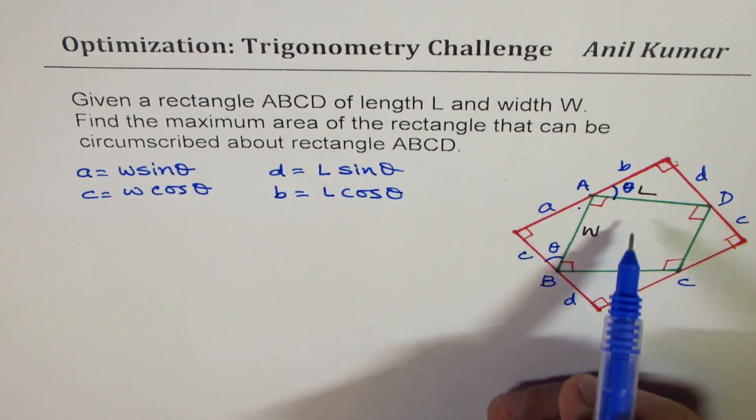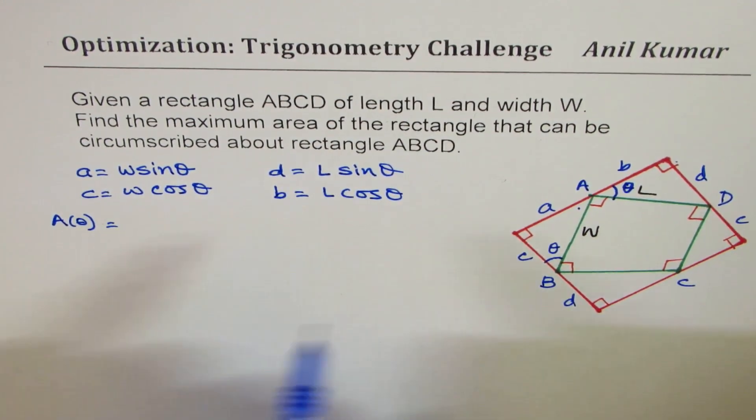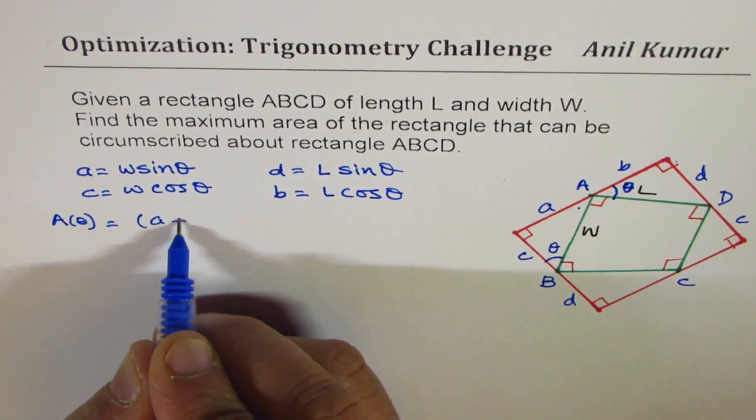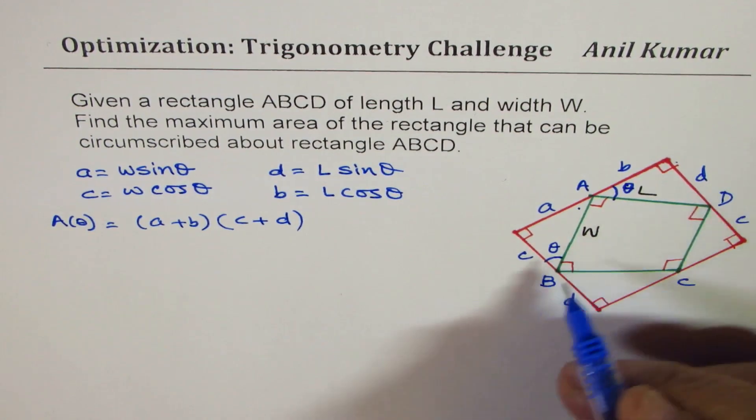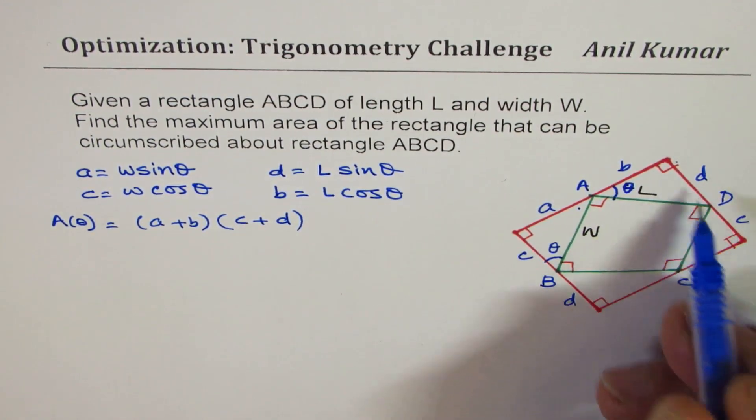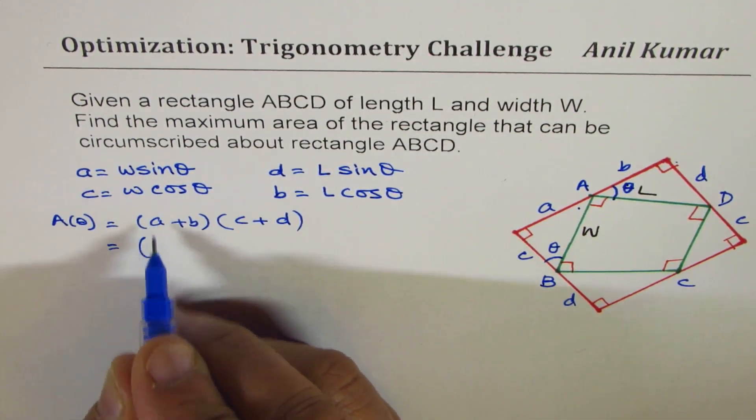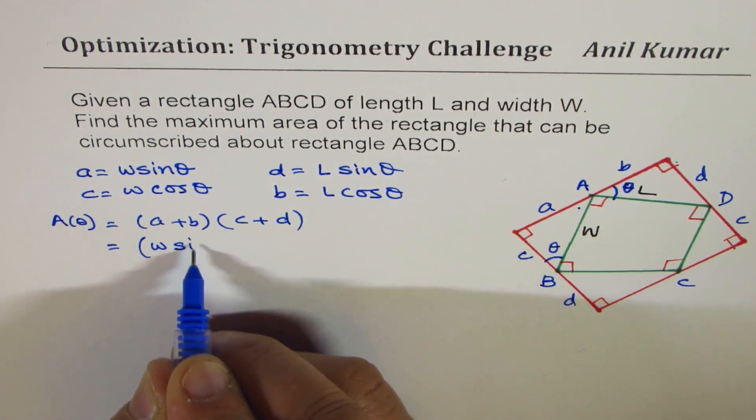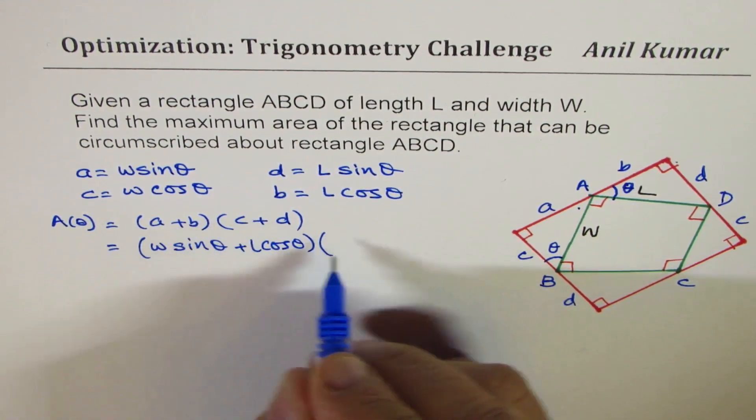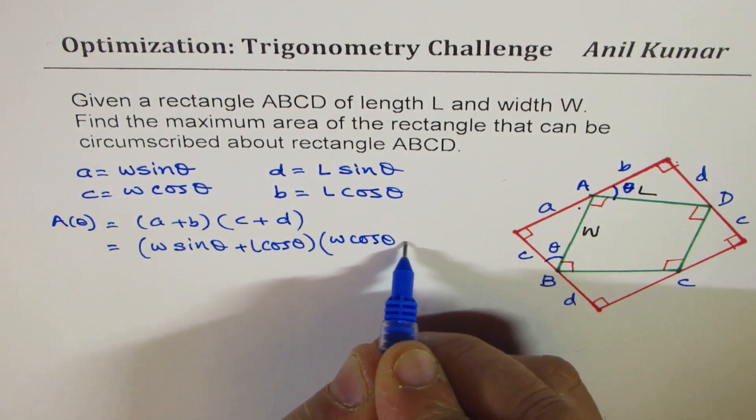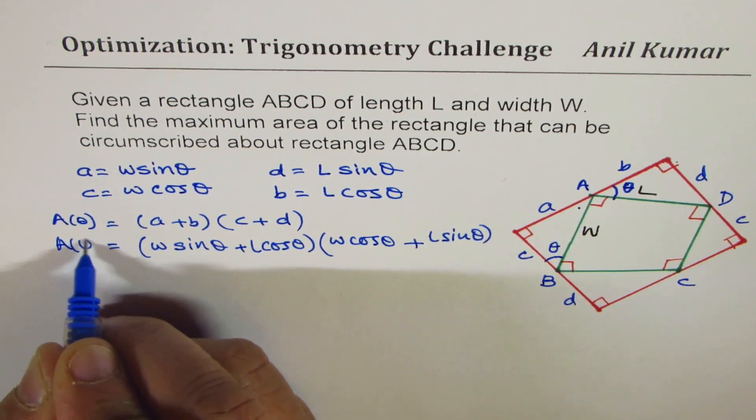Now, what is area? Area of bigger triangle, the outer triangle, as a function of theta, can be written as A plus B times C plus D, right? Now, opposite sides are congruent in a rectangle, therefore, we could write this as C plus D. Now, what is A? A is W sine theta, so we will replace this with W sine theta, plus B is L cos theta, times C, which is L sine theta, plus D, which is L sine theta. So we get the equation in terms of theta.